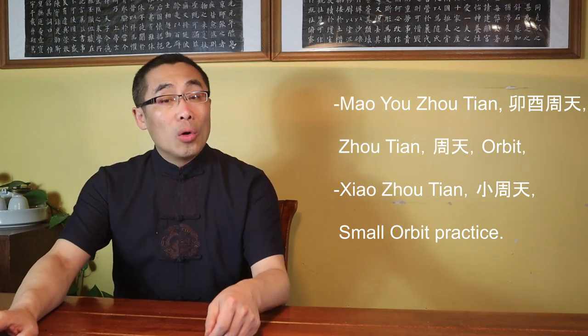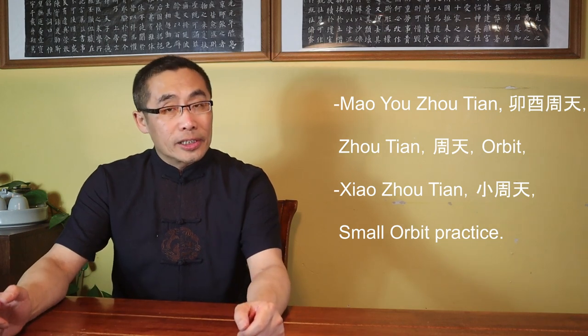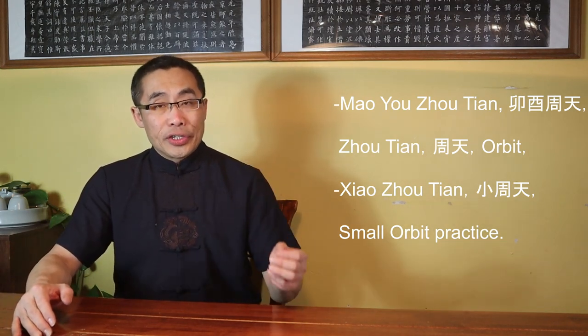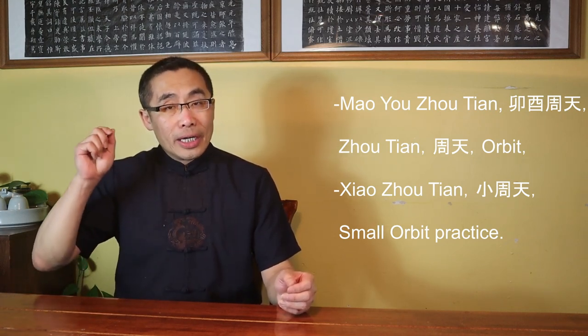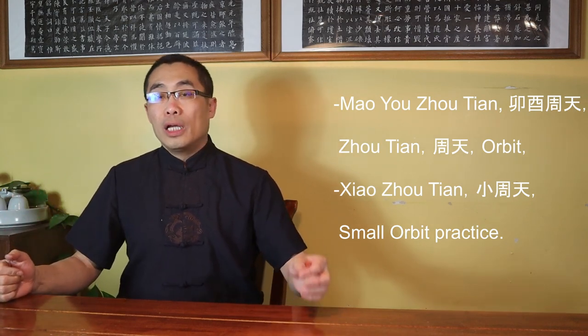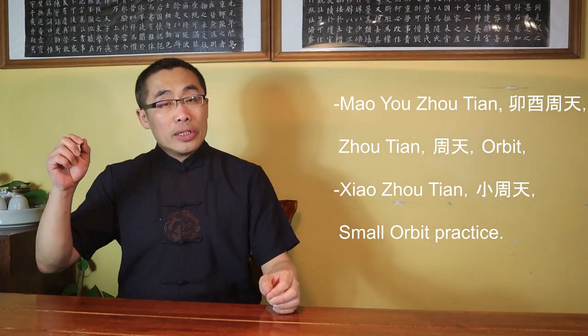In today's video, I'd like to introduce a concept that is unheard of to most of you, Mao You Zhoutian. Zhoutian or Orbit is a key concept in Xiu Dao practice. I have introduced Zhoutian in a prior video, link is in the description. Most practitioners commonly understand Zhoutian to be only about the upward and downward energy flow along the front and back of the body. People often call it Xiao Zhoutian or Small Orbit Practice.